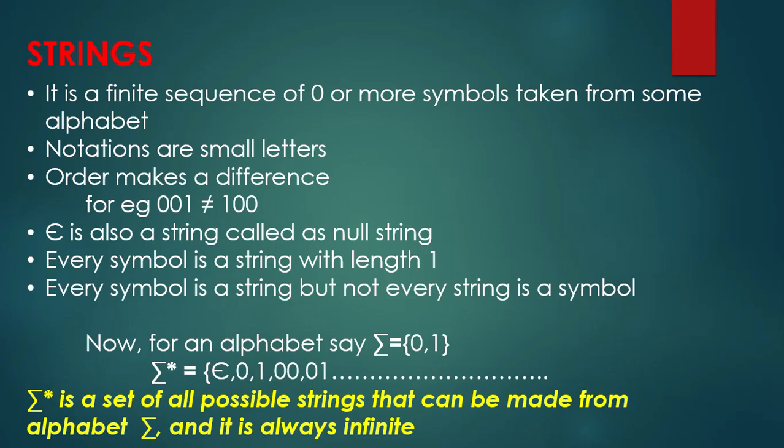A string is a finite sequence of zero or more symbols taken from some alphabet. The alphabet could be {0, 1, a, b, c, ..., z}. For notations, strings are denoted using small letters a, b, c, d, e. Order makes a difference — for example, in alphabet {0,1}, the string 001 is not equal to 100. So order is important.